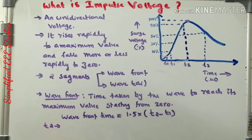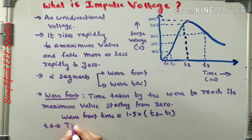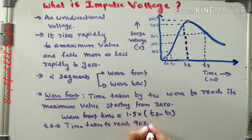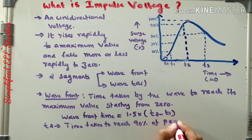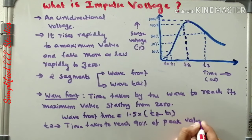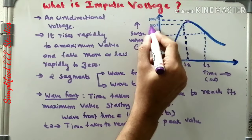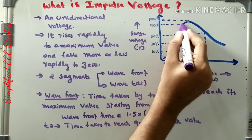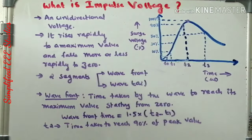What is T2? T2 is nothing but the time taken to reach 90% of the peak value. The peak value is at the top; T2 is the time taken to reach 90% of that peak value.